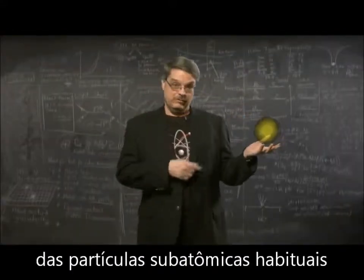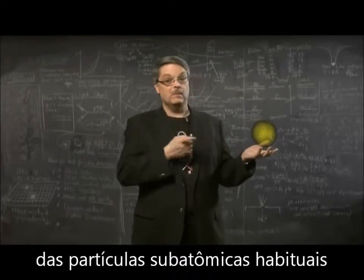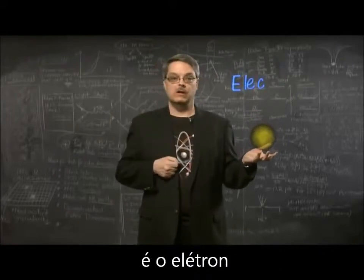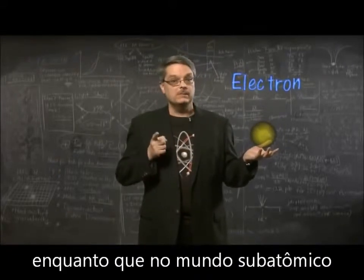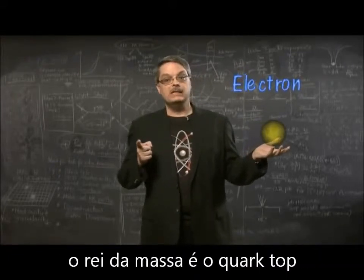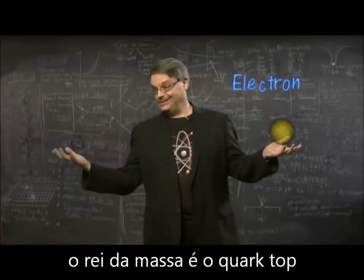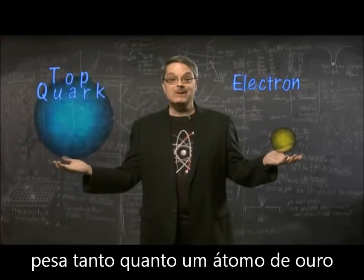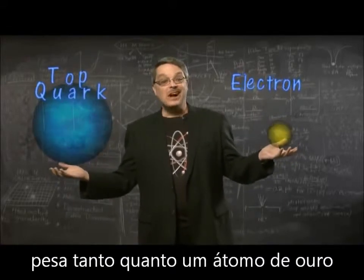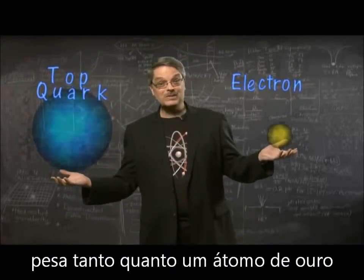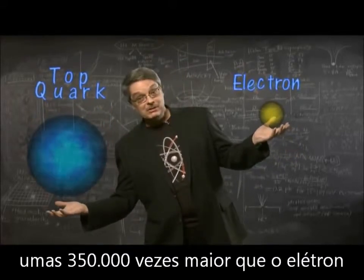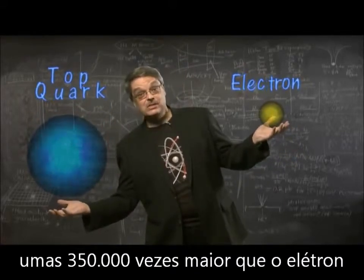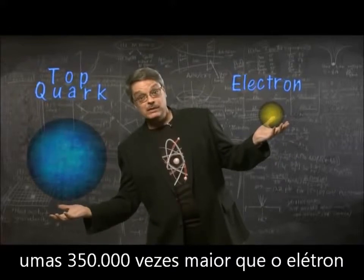The lightest of the familiar subatomic particles is the electron, while in the subatomic world, the king of mass is the top quark. It weighs about as much as an entire atom of gold, about 350,000 times more than the electron.